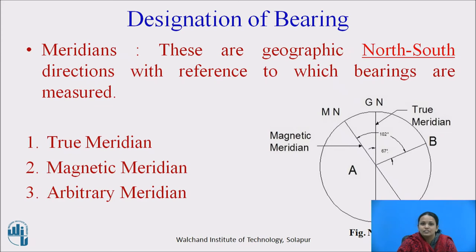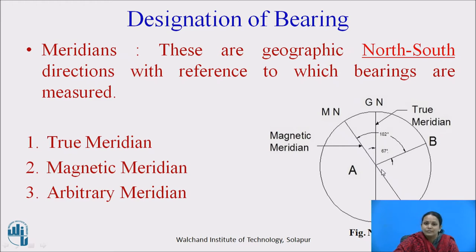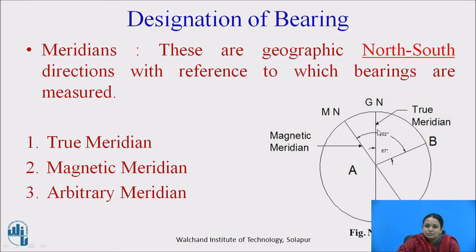Meridian is the geographic north-south direction with reference to which bearings are measured. There are three types of meridians: true meridian, magnetic meridian, and arbitrary meridian. True meridian is the line of intersection with reference to the surface of the earth — it is the geographical line of intersection with respect to the surface of the earth. The angle measured with respect to the true meridian is called the true bearing.